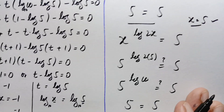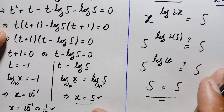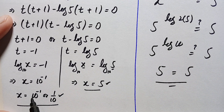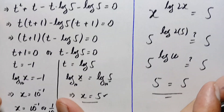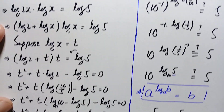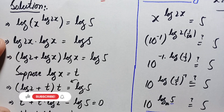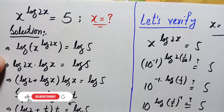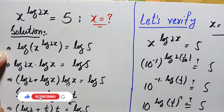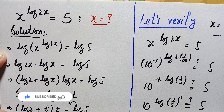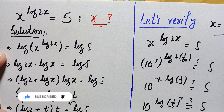So x = 1/10 and x = 5 are both exact and correct values of x in this interesting logarithm and exponential math problem. Don't forget to subscribe to my YouTube channel for more interesting step-by-step math solutions. Thanks for watching.